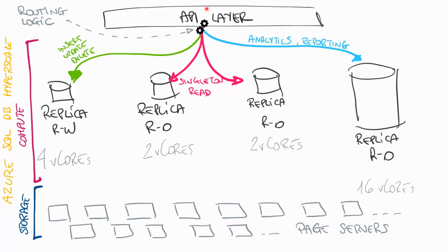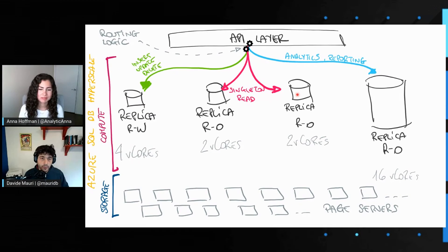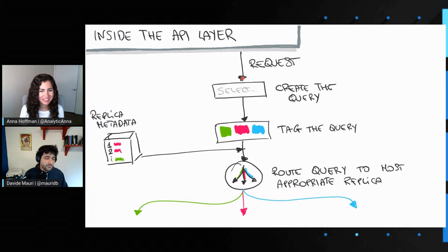The idea is to build something where, once we send a query in our API layer to retrieve some data, the API layer is intelligent enough to understand where is best to execute that query. If it's a read-write query, we just go to the primary. If it's trying to read a small amount of data, it may send the query to smaller replicas — many of them. If it's trying to read a lot of data, it sends the query to the bigger replica, which has a lot of CPU so we can crunch numbers quite quickly. That's the overall idea.